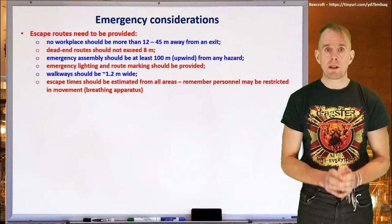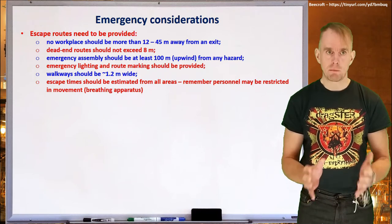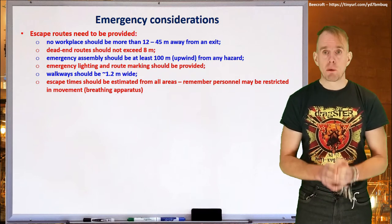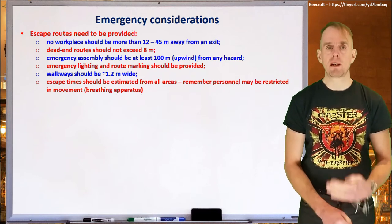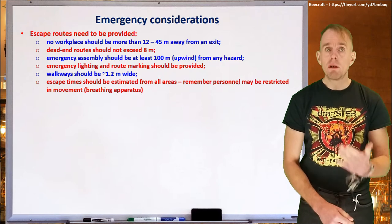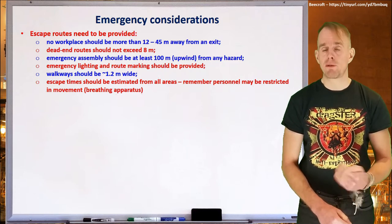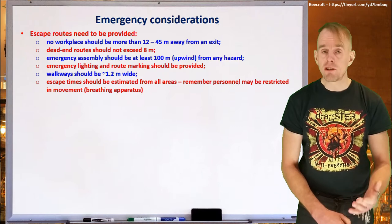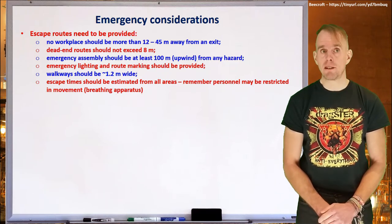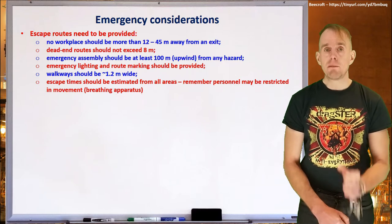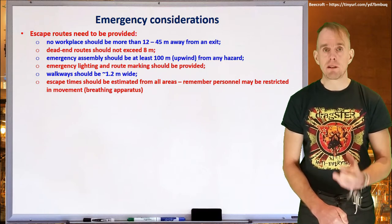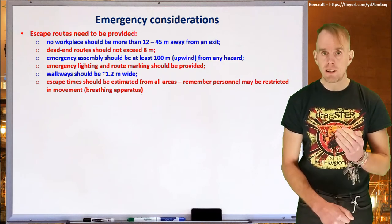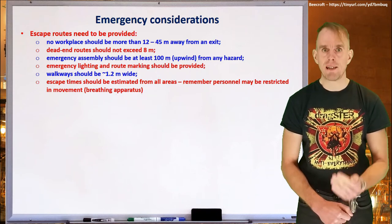Another key part of thinking about safety is what happens in the worst case — what happens in an emergency. The first and most important thing is getting people out. No workplace should be between 12 and 45 metres away from an exit. Dead-end routes should not exceed 8 metres long. Emergency assembly points should be at least 100 metres upwind of any hazard. In an emergency, visibility is likely to be impaired by smoke or other vapours, so emergency lighting and emergency route marking should be provided such that it is unambiguously obvious where an escape route is and where it leads.